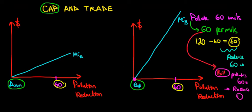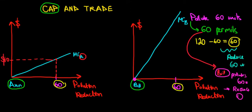We still must reduce 60 units of pollution — that's the rule set by the government. So all 60 units of pollution reduction fall to N; she has to reduce the entire amount by herself at a marginal cost of $40. Recall from the previous video that to achieve a cost-effective policy — reducing pollution at the lowest cost — the marginal cost of N must equal the marginal cost of Bill.